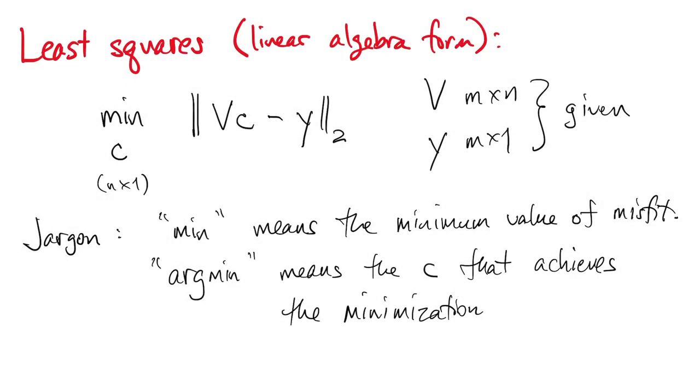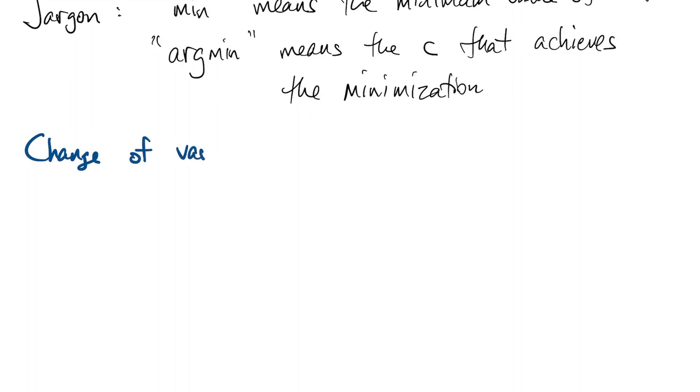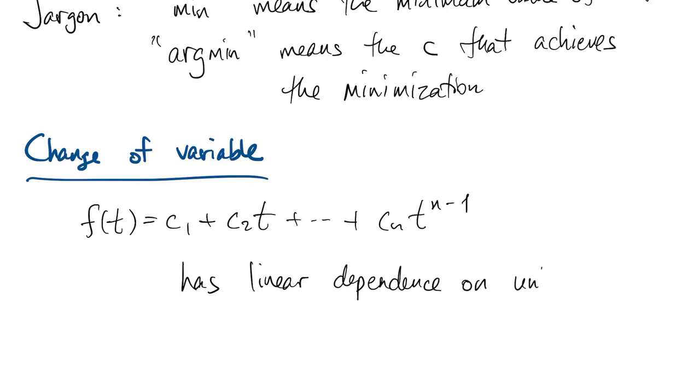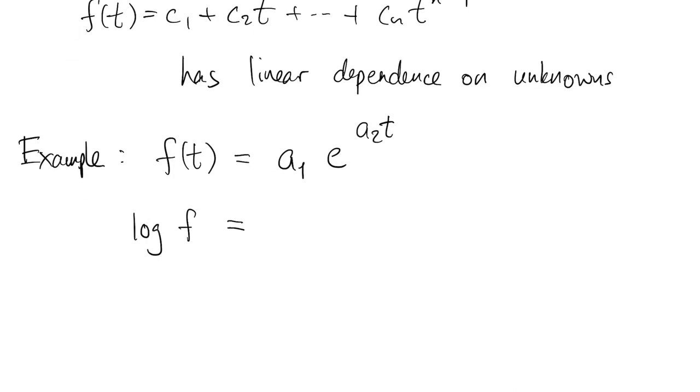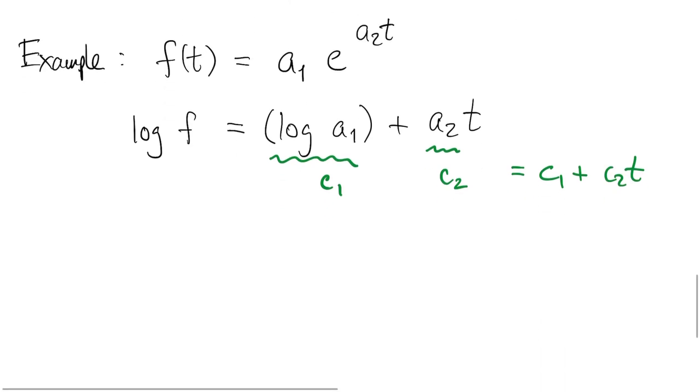Now before we get into the least squares problem more generally, I want to mention one more thing about fitting. One of the important things about our setup is that the functions that we're looking at have linear dependence on these unknown coefficients. That's critical for being able to use linear least squares as the solution strategy. But not every example we want to do has that property. So for instance, we might want to find an exponential fit to data. Well, if we do that, then if we take the log of f, we can see that we get a linear function of time. And so now we've converted it to a linear least squares fit. So if we take the log of the data and fit it to a straight line, then we can recover the coefficients in the exponential fit.